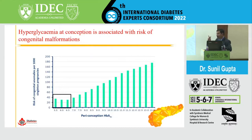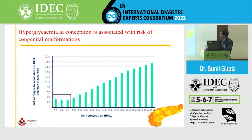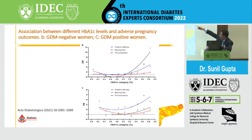If your HbA1c is less than 6.5, the risk of congenital malformation is almost similar to the non-diabetic. Most guidelines recommend trying to achieve pre-conception HbA1c less than 6 ideally, 6.5 is acceptable, but if you have a high risk of hypoglycemia — especially in type 1 diabetes — even up to 7 is acceptable. Recently published data on the association between different HbA1c levels and adverse outcomes in GDM-negative and GDM-positive women shows that even around HbA1c 5.2 to 5.4, the risk figure goes up even in non-diabetics. So around 5.6 to 5.7, one should be a little careful.